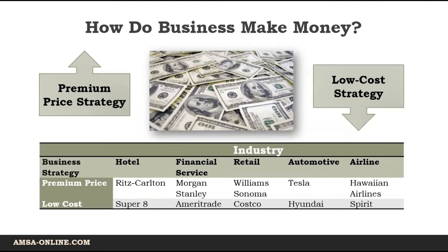Companies try to maximize profits by earning high revenues while maintaining low costs. However, competitors usually try to do the same thing. Companies gain advantage over competitors by using one of two general pricing strategies: low-cost strategies, where a company designs and produces products and services at a lower cost than its competitors, and premium price strategy, where a company tries to design and produce products or services that serve unique market needs, allowing it to charge premium prices.